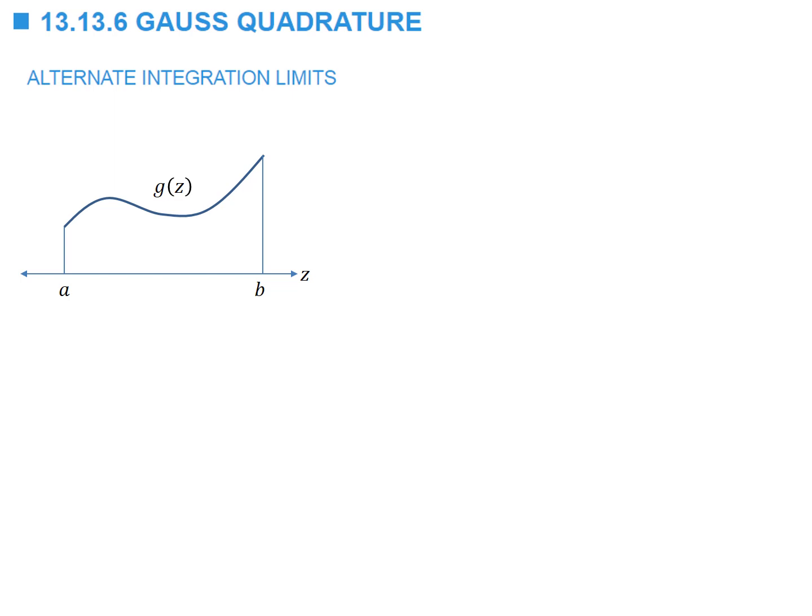In the previous lecture we discussed how to use Gauss quadrature to integrate a function on the integration domain from negative one to one. Today we're going to extend this to use Gauss quadrature to integrate a function g of z whose integration limits go from point a to point b. The idea is to convert this function into another function whose integration limits are from negative one to one. To do this, we're going to linearly transform z to x.